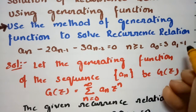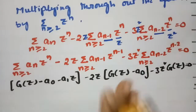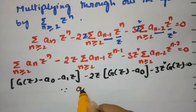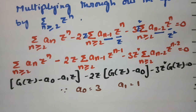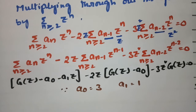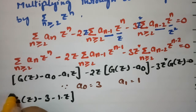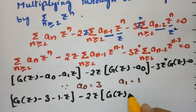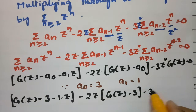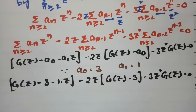Substituting the initial conditions a₀ equals 3 and a₁ equals 1, this becomes: G(z) minus 3 minus z, minus 2z times (G(z) minus 3), minus 3z² times G(z), equals 0.